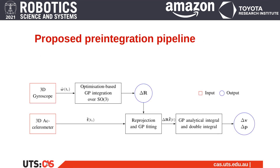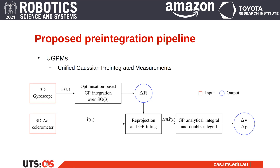In this diagram, we show how this method is used to generate pre-integrated measurements from IMU data. We first perform the integration of the angular velocity to obtain the system's orientation, which we use to reproject accelerometer data in a single referential frame. From there, we model the acceleration signals with Gaussian processes to perform analytical single and double integration to obtain the velocity and position components of the pre-integrated measurements. We call these novel pre-integrated measurements UGPM, for unified Gaussian pre-integrated measurements.